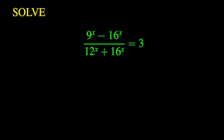Good day. We will continue our series of challenging mathematical equations that involve basic algebra and calculus. Today we want to solve the following equation: the fraction with numerator 9 to the power x minus 16 to the power x, and denominator 12 to the power x plus 16 to the power x, equal to 3. This is a type of exponential equation that frequently appears in mathematical olympiads around the world.